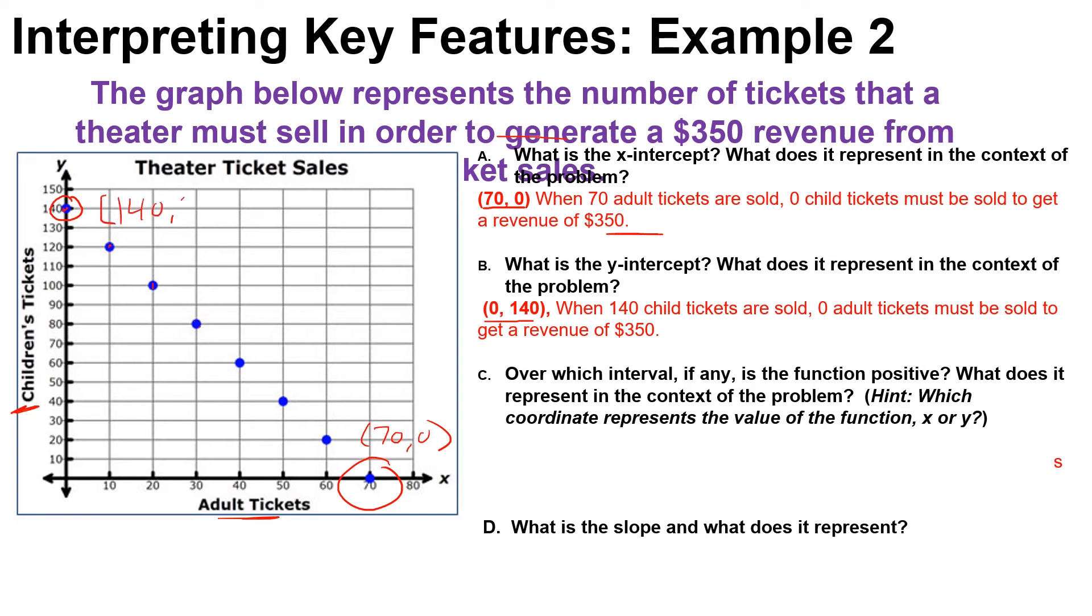Let's look at c. This is over which interval, if any, is the function positive? What does it represent in the context of the problem? And our hint is which coordinate represents the value of the function, x or y? So from 0 to 70, or basically if x is greater than or equal to zero but less than 70 where x is whole numbers - it has to be whole numbers because we're looking at ticket sales so you can't have half a ticket, right?